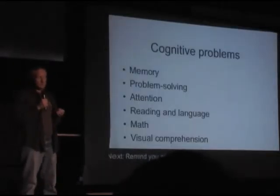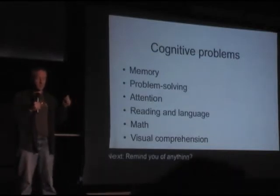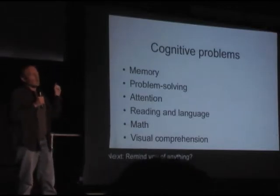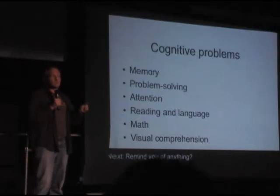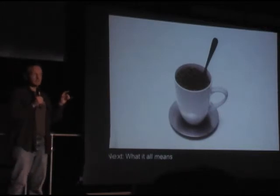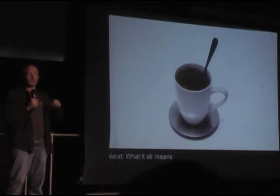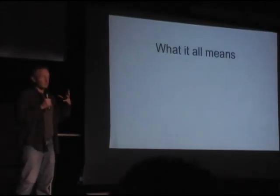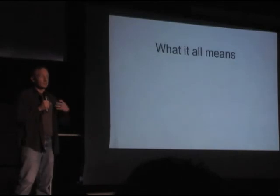Now let's look at cognitive problems. WebAIM, a group at the University of Utah, has broken it down into six different things: memory, problem solving, attention, reading and language, math, and visual comprehension. Everyone sit here and think about when this happens to you — and I'm going to guess it's somewhere between the time you wake up and the second cup of coffee. Everyone at all times is subject to cognitive disabilities in one sense or another. It's not just nothing versus Down syndrome — there's a whole range. At some time, in some situation, we are all disabled. It's not about us and them. There is only us.